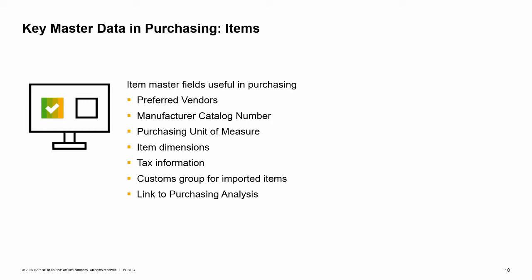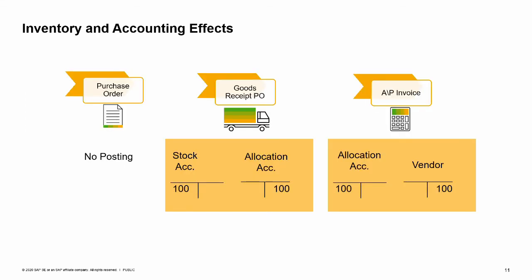Information is also available on taxes and on customs groups for imported items. For items with a purchasing history, you can click on the chart icon on the left of the tab to display a graphical purchase analysis.